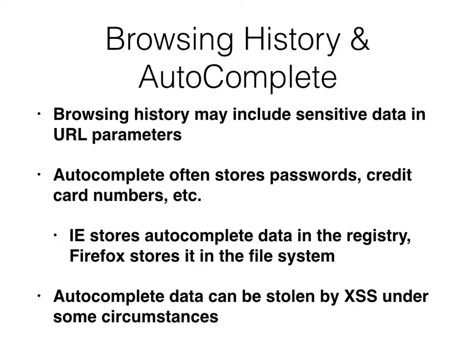Then you've got your browsing history, which can be stolen in a variety of ways. If someone gets physical access to your machine, they can just click on the history button. On the web, they can look for CSS to see which links have been visited. Autocomplete stores things in the registry or file system — Firefox is notorious for this. If you use Firefox or Chrome and you store passwords, it doesn't automatically put a master password on them, so you can often just open them up and see them. You can also steal autocomplete data with cross-site scripting, although there are defenses and it's hard to do.